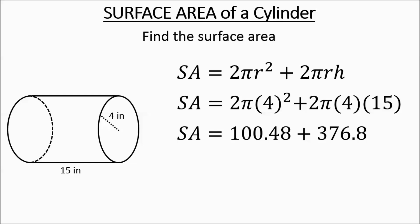So that 376.8 is your lateral area. And then the 100.48 is your circles. You add those together and you get 477 and 28 hundredths. And that is it. Hope this helps for the homework.